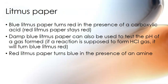Litmus paper is another great tool because it changes colour depending on pH. You can identify a carboxylic acid because it will turn blue litmus red. You can identify an amine because it will turn red litmus blue. You can also identify any reaction where HCl gas is being produced — hold litmus paper above the test tube and the HCl gas will turn blue litmus red.